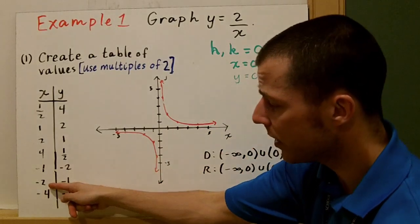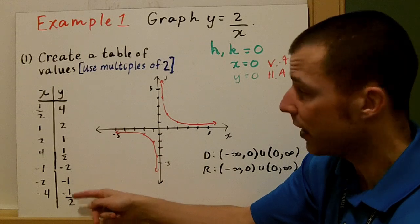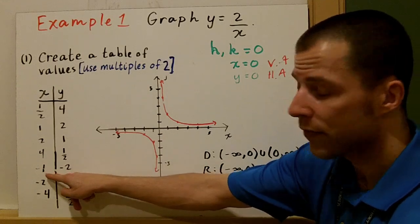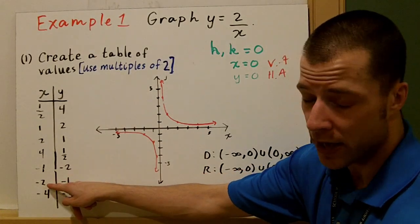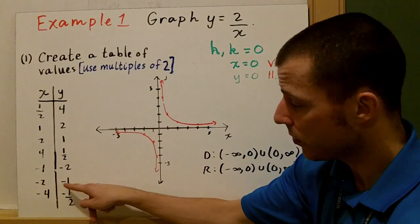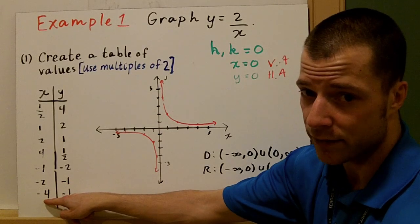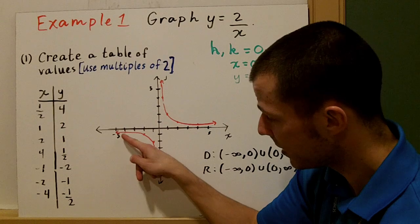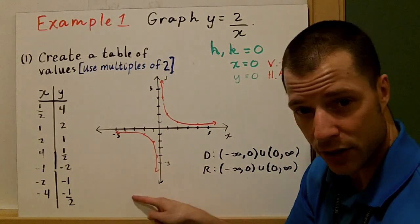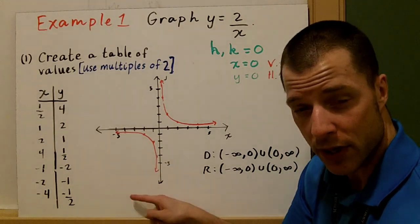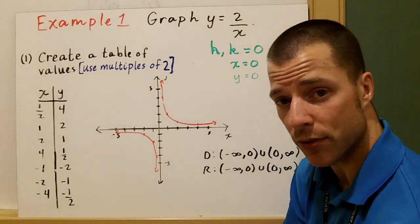When I plug in negative 1, negative 2, and negative 4, I get the following y values: 2 divided by negative 1 is negative 2; 2 divided by negative 2 is negative 1; and 2 divided by negative 4 is negative one-half. I see those three points in the third quadrant, and again, I follow my asymptotes. That's very important when you graph these — follow your asymptotes.